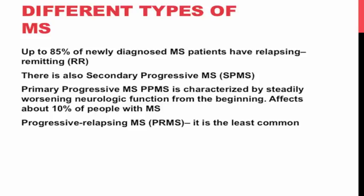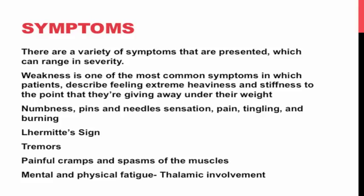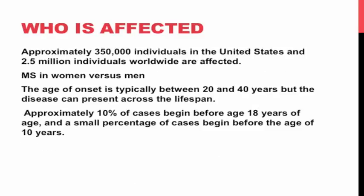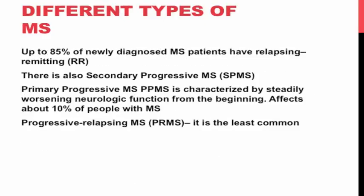The fourth and least common type of multiple sclerosis is progressive relapsing MS. In this type, there is a steady progression of the disease from the very beginning with occasional flare-ups or attacks. People with this form can experience some recovery from the neurological deficits that arise from these attacks, but the disease continues to progress without remission.